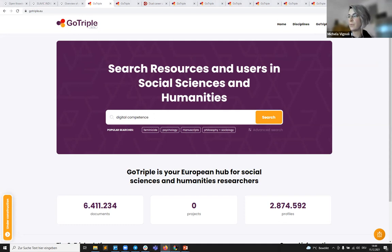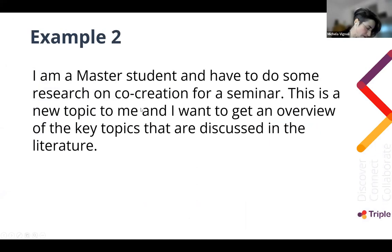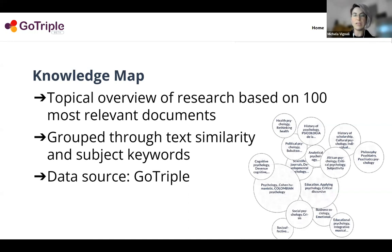With this new knowledge, we can go back to our search interface and type in the new topic we found — 'digital competence.' You can repeat the search, create again the knowledge map, and then get another overview of the digital competence search results, subgrouped again in topics relevant within that topic of interest. This is the first example. Here you can get a topical overview of research publications based on the 100 most relevant documents — very similar to Open Knowledge Maps directly, but based on GoTriple data focused on SSH.